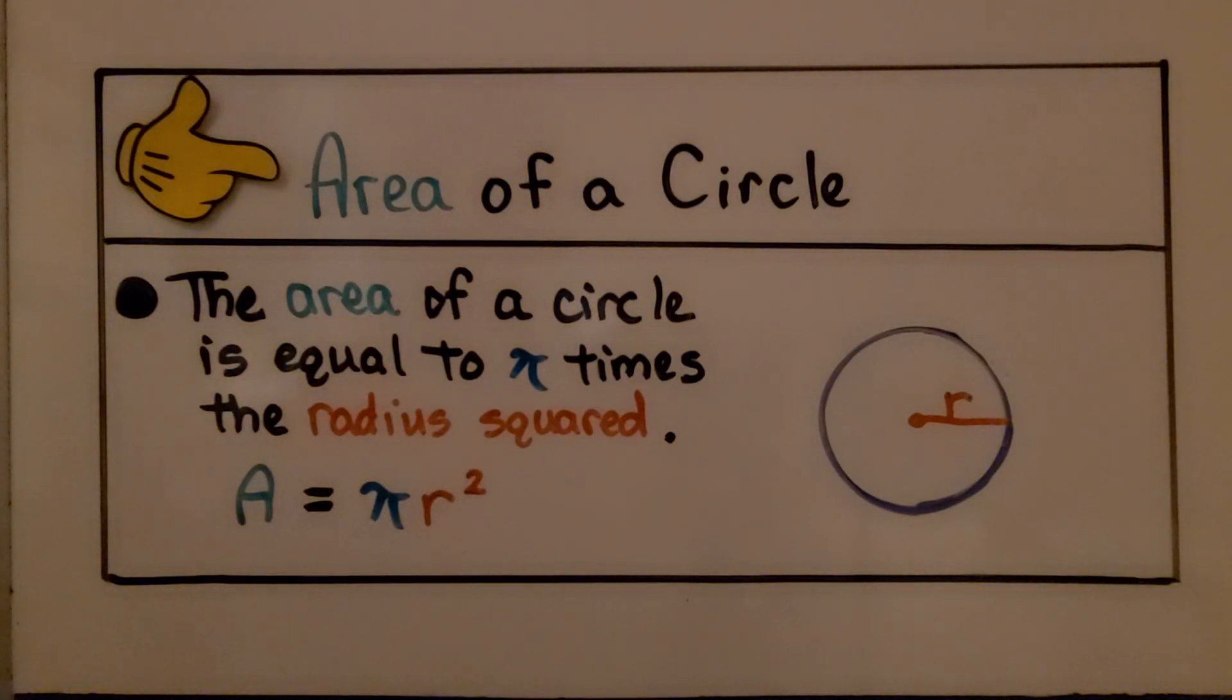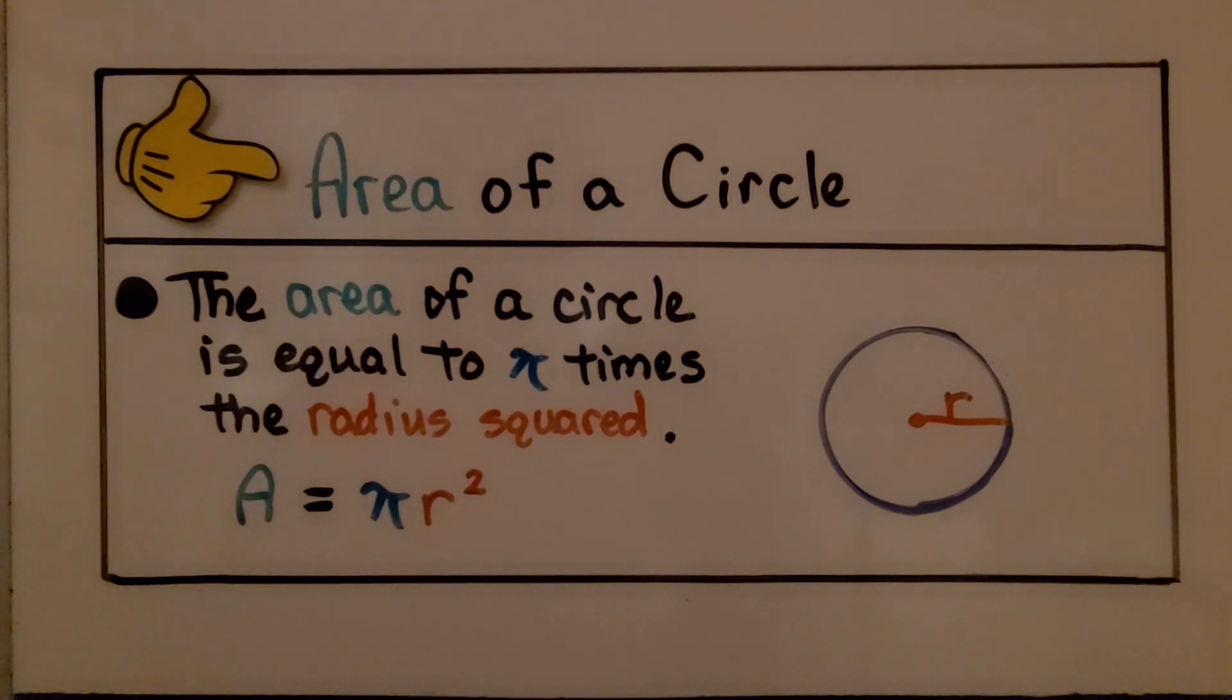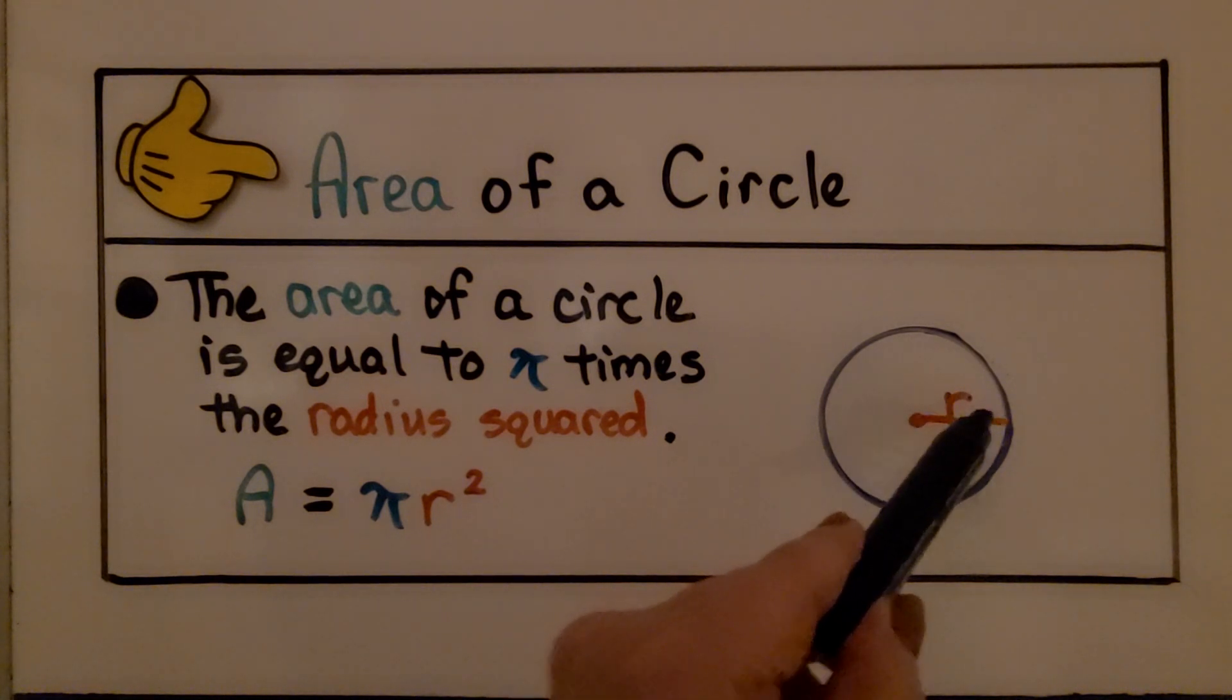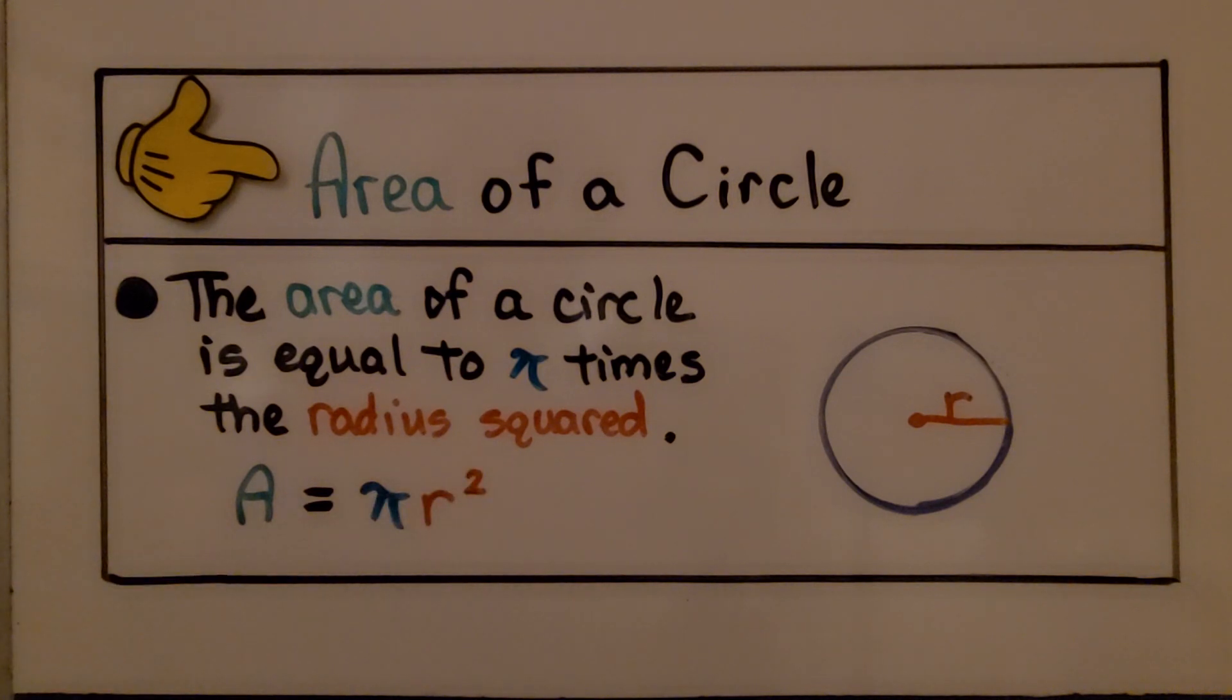So for your notes, the area of a circle is equal to pi times the radius squared. It's pi times the radius squared. Area is equal to pi times radius squared.